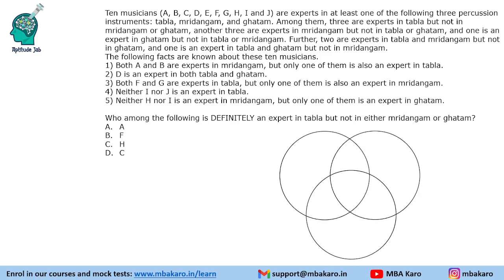So let us make a 3-set Venn diagram. We have 3 instruments: tabla, mridangam, and ghatam. We are given that 3 are experts in tabla but not in others — so only tabla — 3 people are expert. Another 3 experts in mridangam but not in others, so 3 experts in only mridangam. 1 is an expert in ghatam but not in tabla or mridangam. 2 are experts in tabla and mridangam but not in ghatam. And 1 is an expert in tabla and ghatam but not in mridangam. So these are the 10 people who will be placed. No person is expert in all, and no person is expert in only mridangam and ghatam.